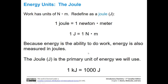We're going to redefine this quantity as something called a joule, and that's going to be our new unit of energy for this chapter. A joule is one newton times meter — one capital J is equal to one newton times meter. Energy is the ability to do work, and energy is also measured in joules. We're going to use joules as our primary unit of energy.